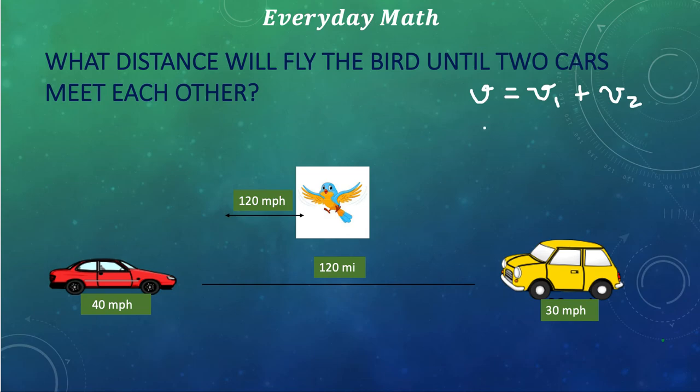And now V, the speed or velocity, is distance over time, is equal to V1 plus V2. What we want to find now is the time, how much time is going to pass until those two cars meet with each other.